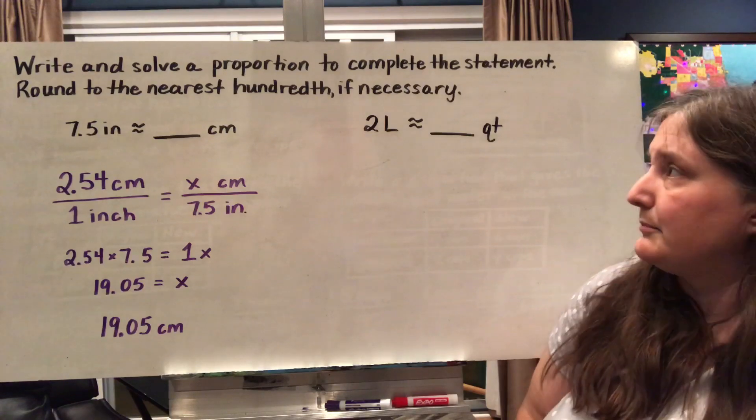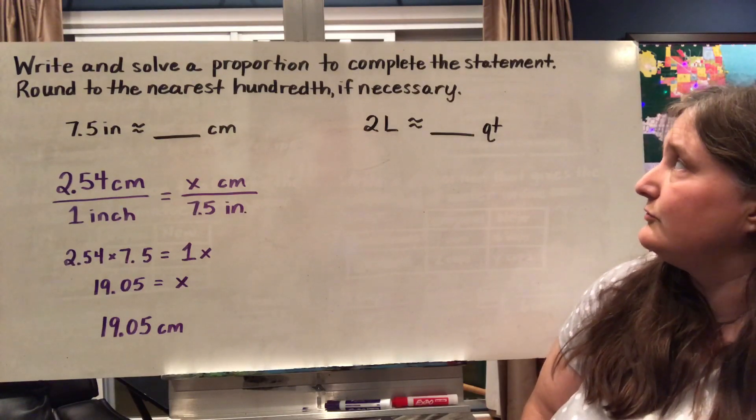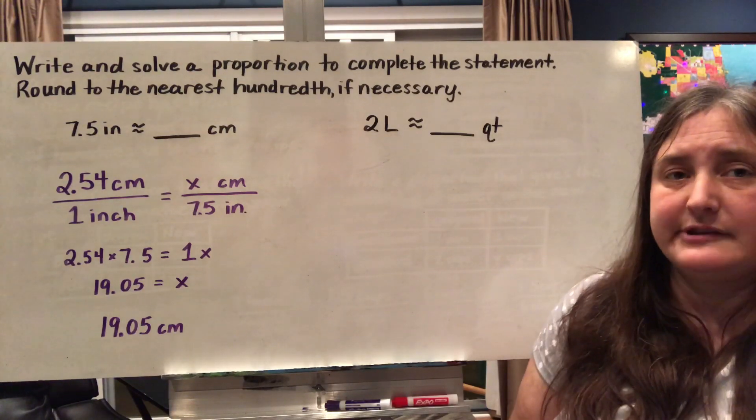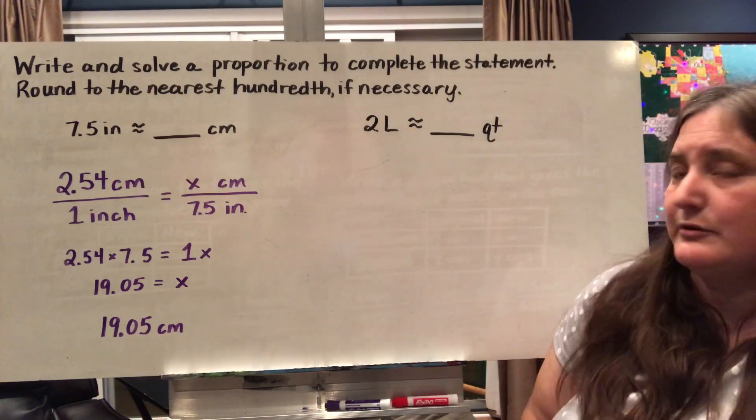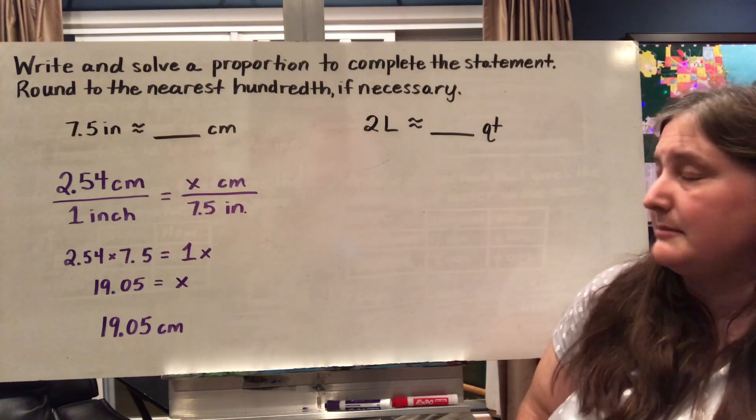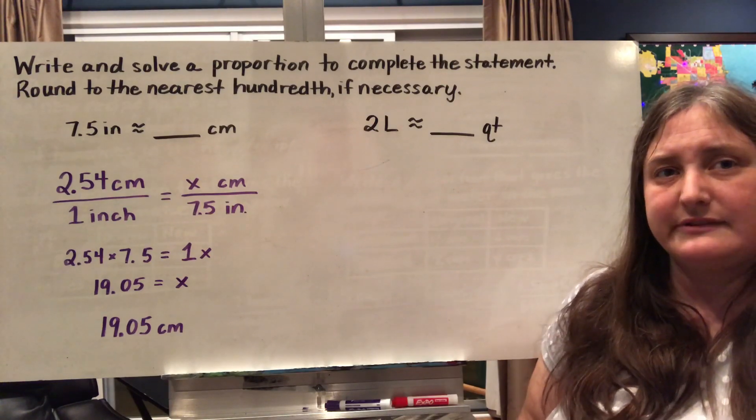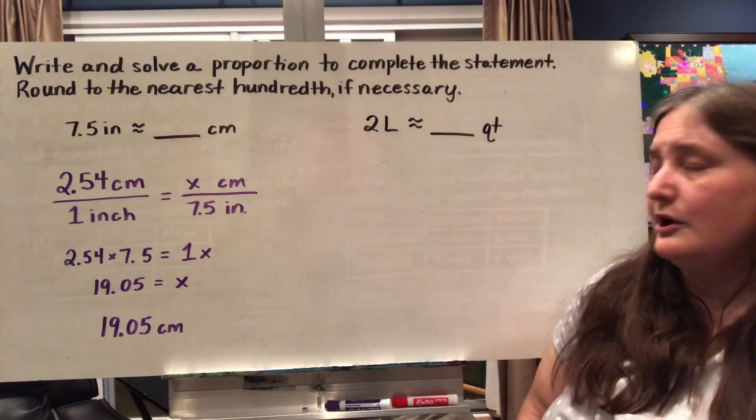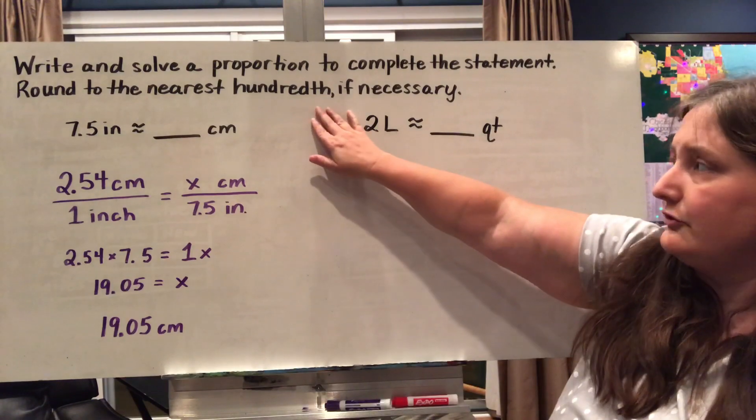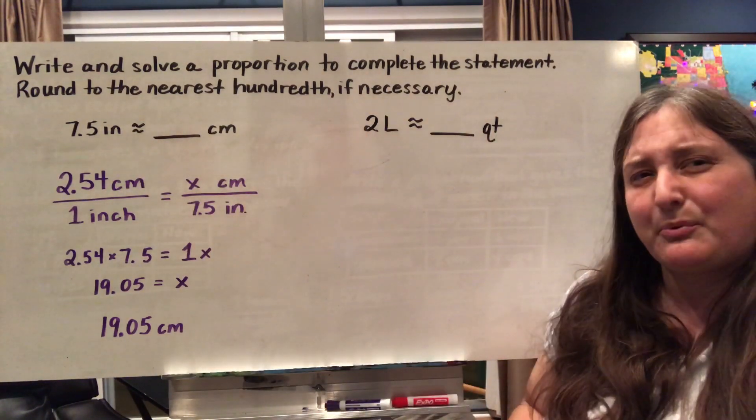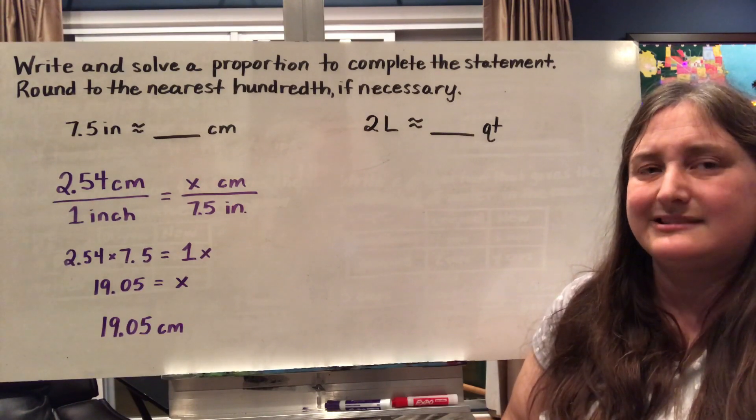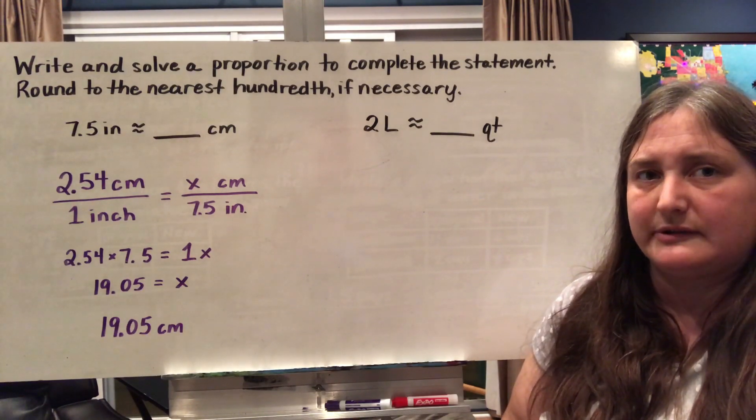All right, let's look at some proportions that we can use to solve different types of unit problems. So let's say we're trying to convert 7.5 inches into centimeters. Well, they're not going to convert exactly because they're two different systems. So we're going to round to the nearest hundredth. And we're going to use this wavy equal sign, which means approximately equal to, because it's not going to be exact since we're going to be doing some rounding.